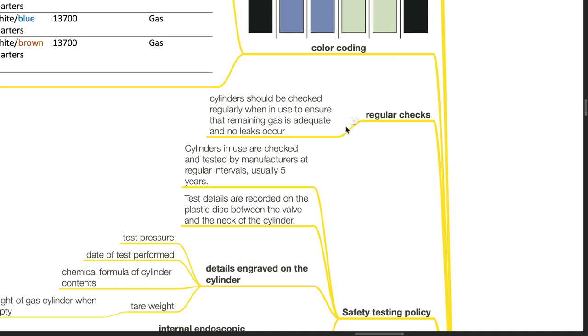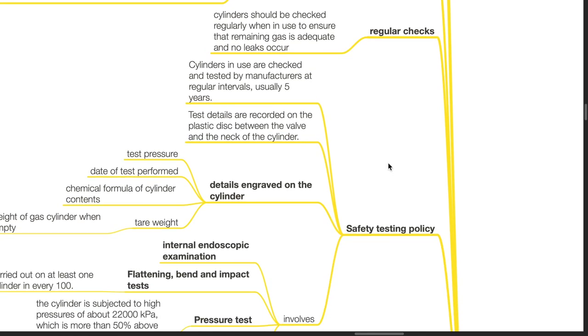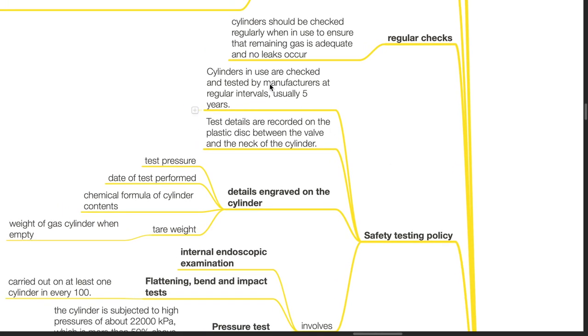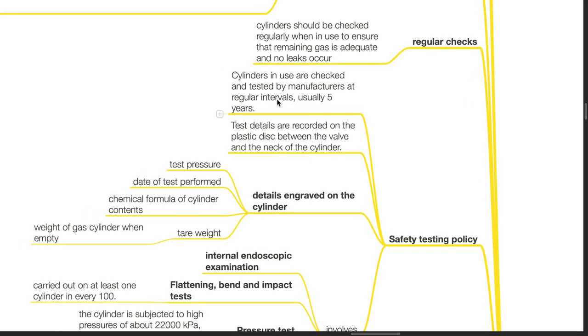Regular checks: Cylinders should be checked regularly when in use to ensure that remaining gas is adequate and no leaks occur. Safety testing policy: Cylinders in use are checked and tested by manufacturers at regular intervals, usually 5 years. Test details are recorded on the plastic disc between the valve and the neck of the cylinder.